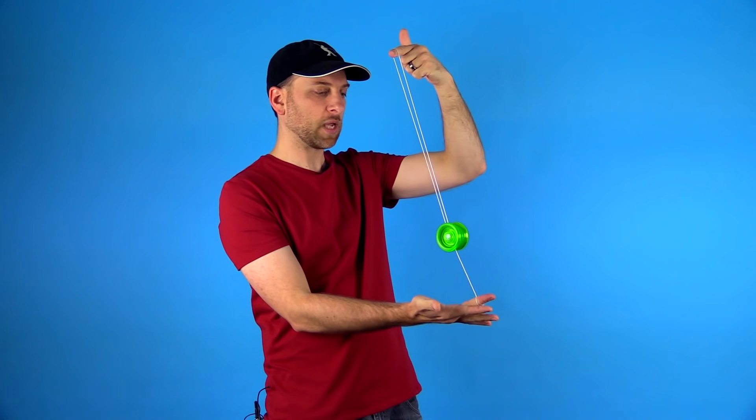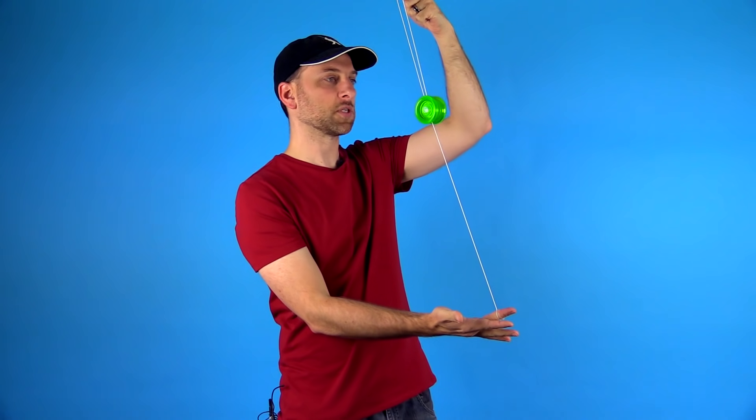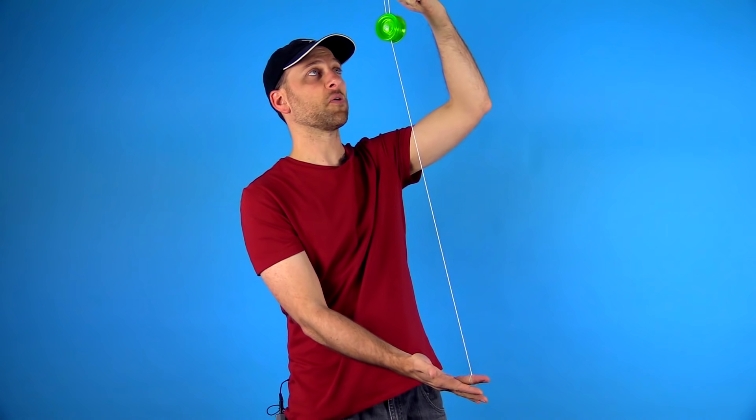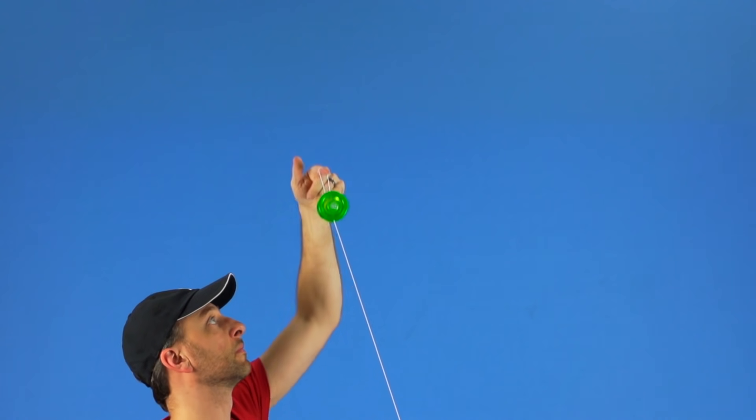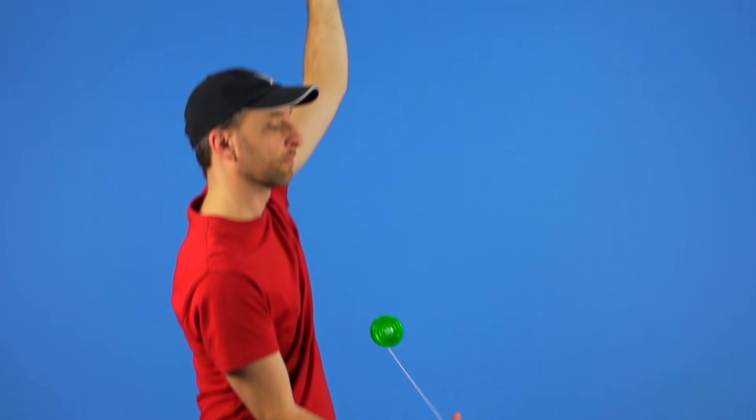All you're going to do to make the yoyo climb the string is just pull your hands apart, and you can see that makes the yoyo go up. When it gets to the top, you just toss the yoyo up, and if it's got enough spin, it should wind up and go right back into your hand.